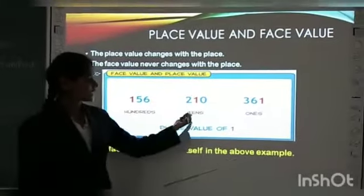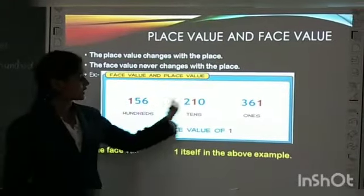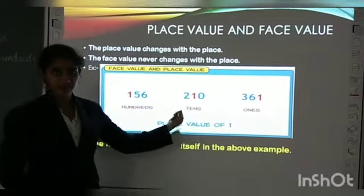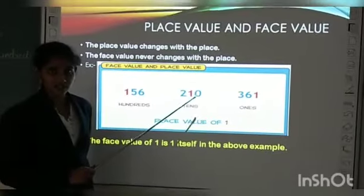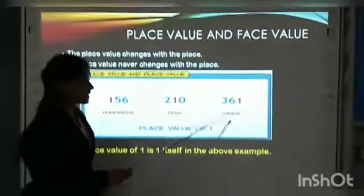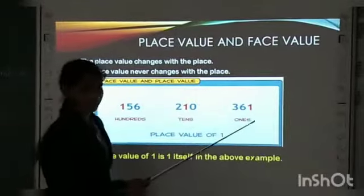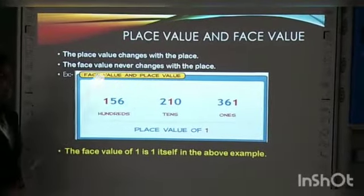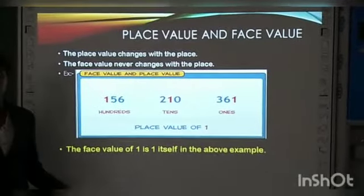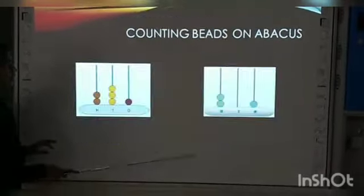In the second example, the same one is in tens place. But the shape doesn't change, right? In the last example, it is in one's place. Understood? The place value changes with the place, and the face value never changes with the place.